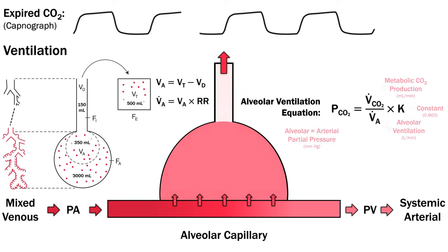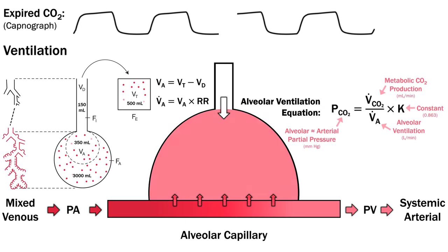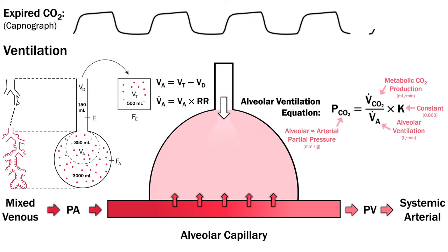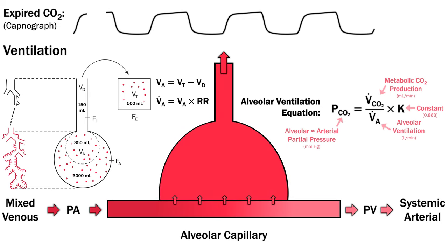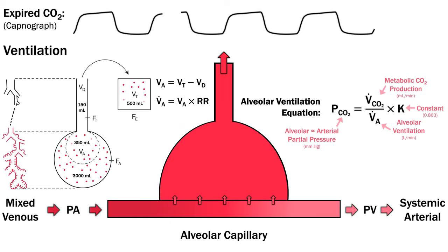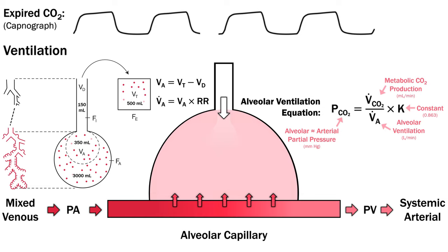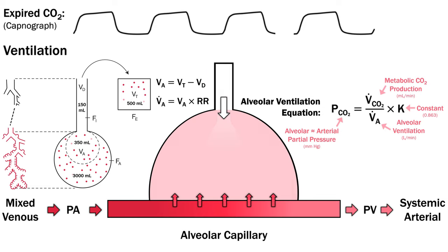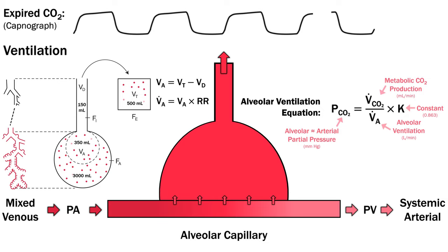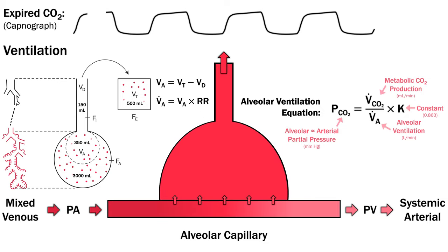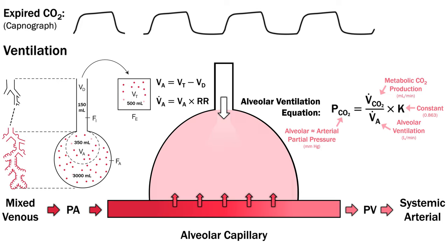The relationship between ventilation and CO2 is formalized in the alveolar ventilation equation which simply states that the partial pressure of carbon dioxide in the alveolus or the pulmonary capillary is directly proportional to the metabolic production of CO2 and inversely proportional to the alveolar ventilation. The metabolic production term is also important for example hypermetabolic states such as malignant hyperthermia can sometimes be identified by a sudden rise in CO2.